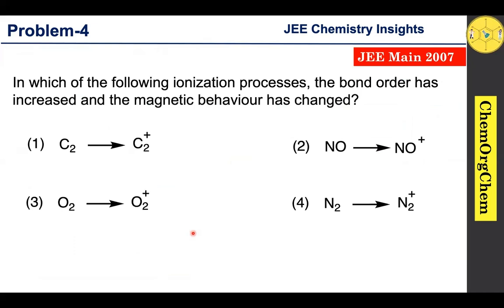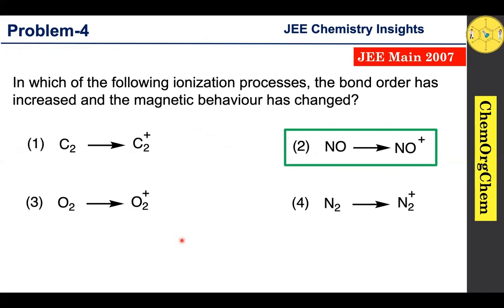Based on our discussion, the correct answer for this question is option 2 — the ionization of NO to NO⁺. That's it for today's problem. I hope this video helped you understand the question. If you enjoyed it, give it a thumbs up, share it with your friends, don't forget to subscribe, and thanks for watching — bye bye!